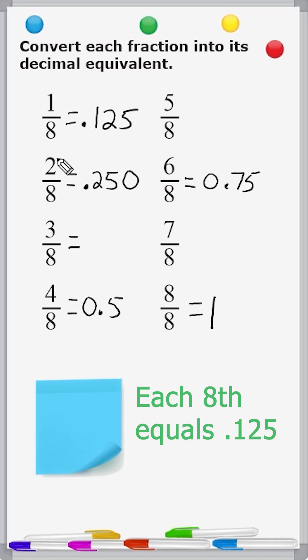And 3 eighths is just 1 eighth greater than 2 eighths, so we're going to add 0.125 to 0.250, which would be 0.375.